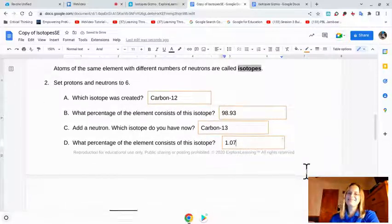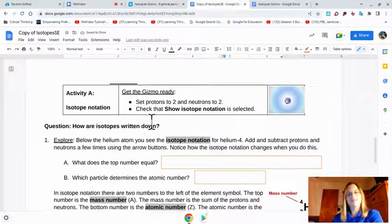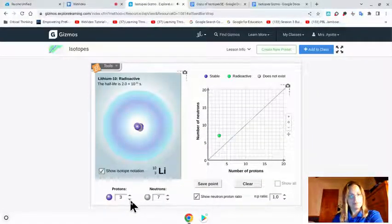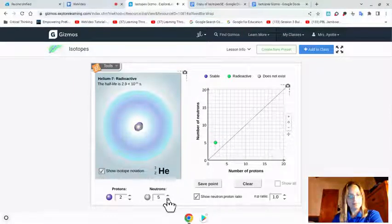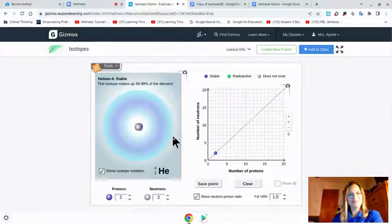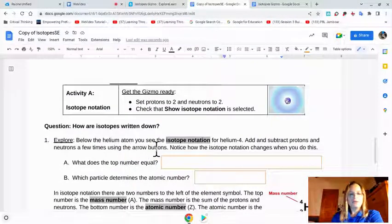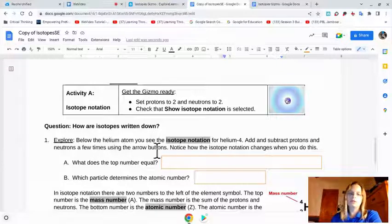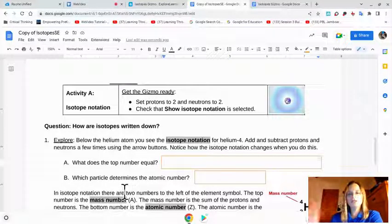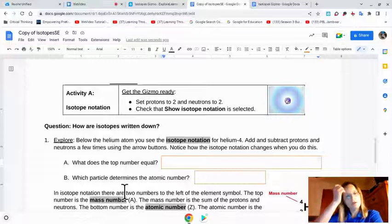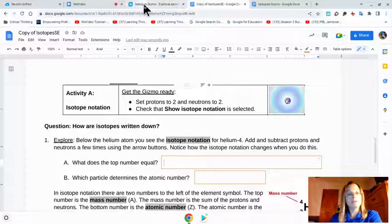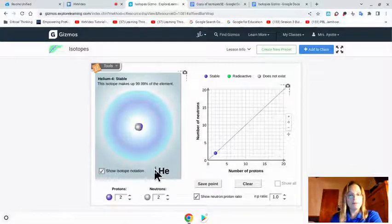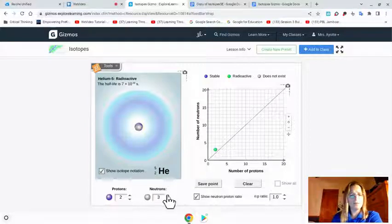Now let's move on. Activity A. Set protons and neutrons to 2. So you see the isotope notation for helium-4. Add and subtract protons and neutrons a few times. Notice how the isotopic notation changes when you do this. What does the top number equal? So let's look at the isotope notation. The top number is a 4 here.